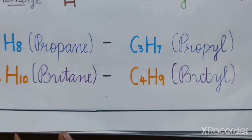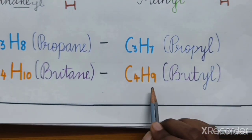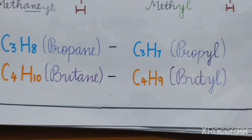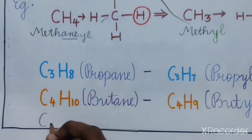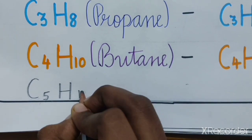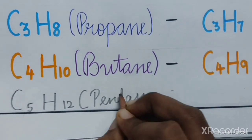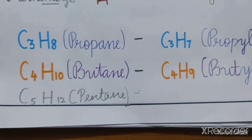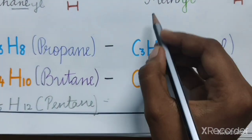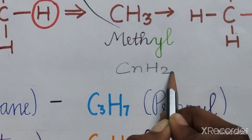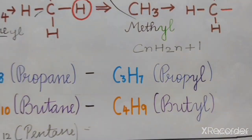If we remove one hydrogen atom from butane (C4H10), we will get C4H9, that is nothing but butyl. Now here is the molecular formula and name of the alkane — try to find its alkyl name with the molecular formula. You can use the general formula for alkyl, that is CnH2n+1. If you know the answer, do comment down. I hope you all understood what is an alkyl.